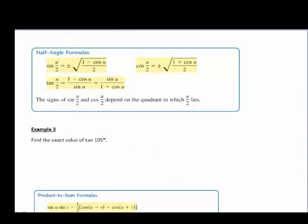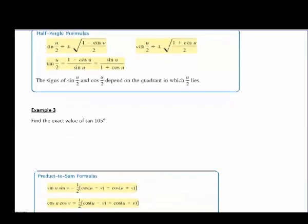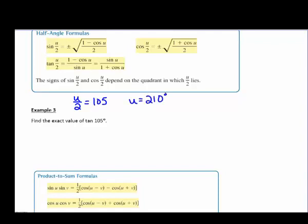Let's take a look at our half angle formulas — these are for when we have an angle divided by 2. For example number 3, we want the exact value of the tangent of 105 degrees. If we look at 105 as u over 2, then u is going to be 210 degrees, which is on the unit circle. 105 is not on the unit circle, but 210 is, so we can use that. We're finding the tangent of 210 divided by 2, so everywhere we see u in our formula, we plug in 210.